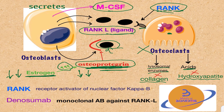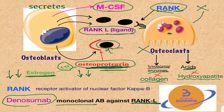There is a medication called denosumab, which is a monoclonal antibody against RANK ligand. It inhibits the function of RANK ligand, thereby blocking osteoclast activation and bone resorption. Denosumab can be used in osteoporosis and also in diseases that result in excessive bone destruction, such as bone tumors and other disease processes that cause bone destruction.